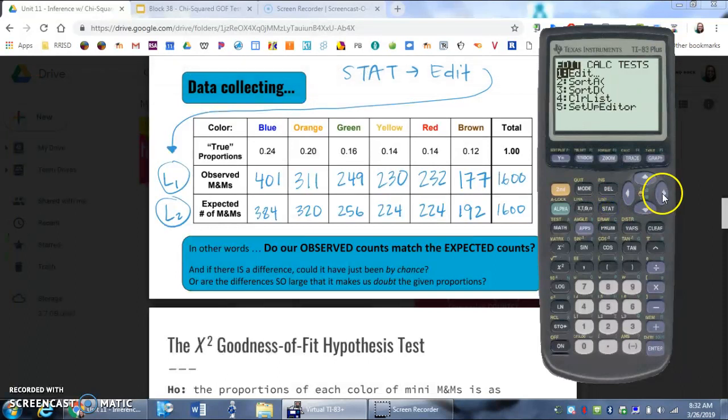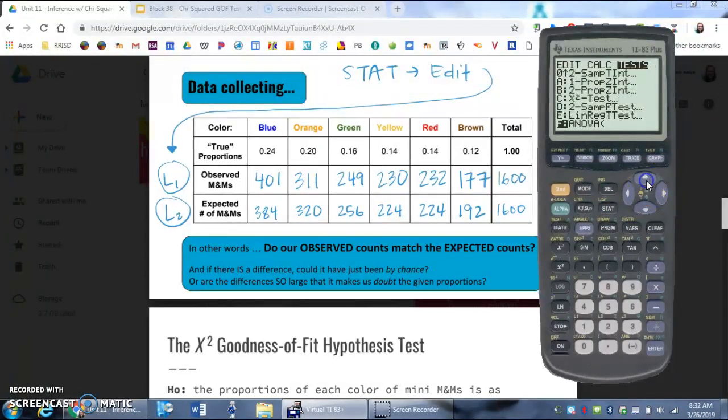If I had a newer calculator, an 84 or newer, I could go to stat tests, and then towards the bottom of the list there would be an option that said chi-squared GOF test. This is just regular chi-squared tests, which won't work for goodness of fit. It's only for the other two types of chi-squared tests that we're going to learn next class. So I'm kind of stuck.